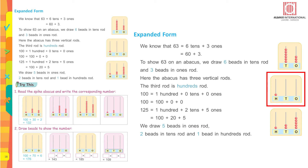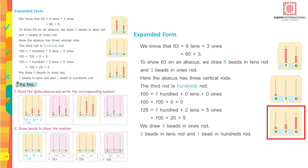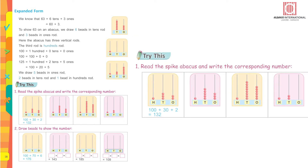100 equals 100 plus zero tens plus zero ones. 125 equals 100, two tens, and five ones. We draw five beads in the ones rod, two beads in the tens rod, and one bead in the hundreds rod.